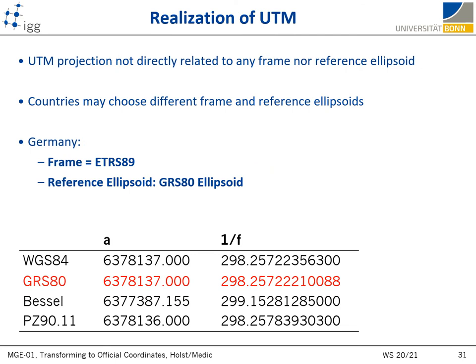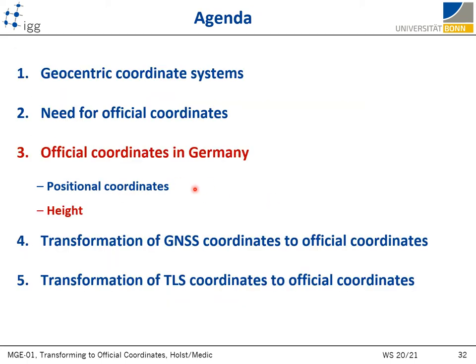Although UTM is a global cartographic projection solution, it is not directly related to any of the previously mentioned reference frames or reference ellipsoids. Every country can select its own set; Germany uses the ETRS reference system and the reference ellipsoid GRS-80. That concludes the positional coordinates on the map, and now we will talk about heights.